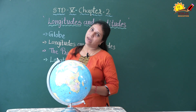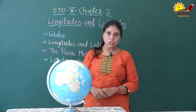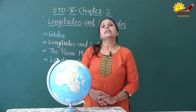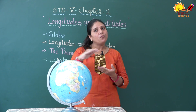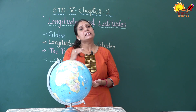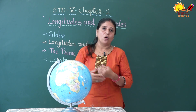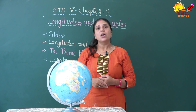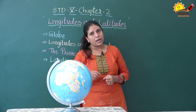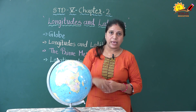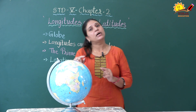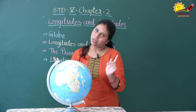So without wasting our time, let me start. Dear students, ancient people believed that the shape of the earth is flat — that if we go far away from any place, somewhere it ended and we would fall off from it. But our scientists and astronomers proved through their theories and experiments that the shape of the earth is not flat, it is round.